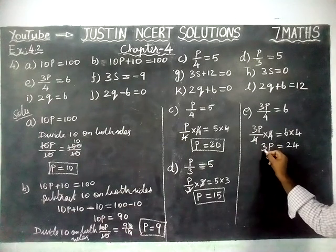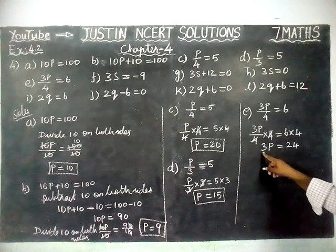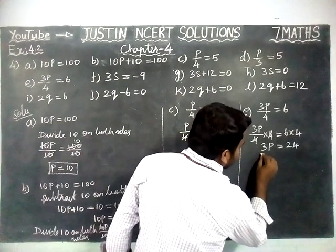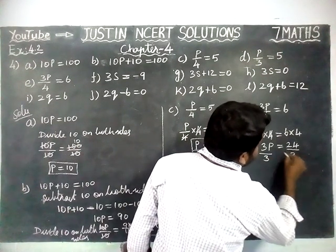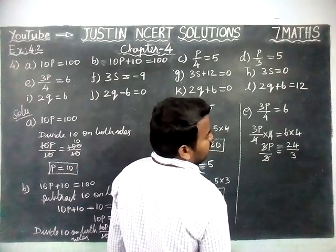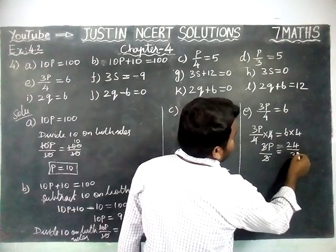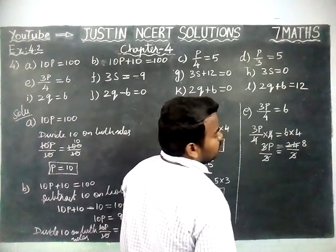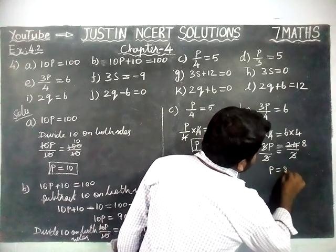Now, 3P is there. To get the variable, we are going to divide 3 on both sides. 3, 3 gets cancelled. We are going to simplify: 1 three is 3, 8 threes are 24. So, P is equal to 8.